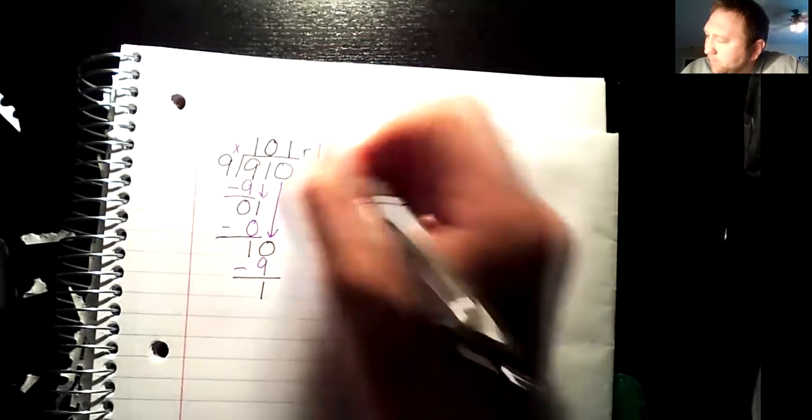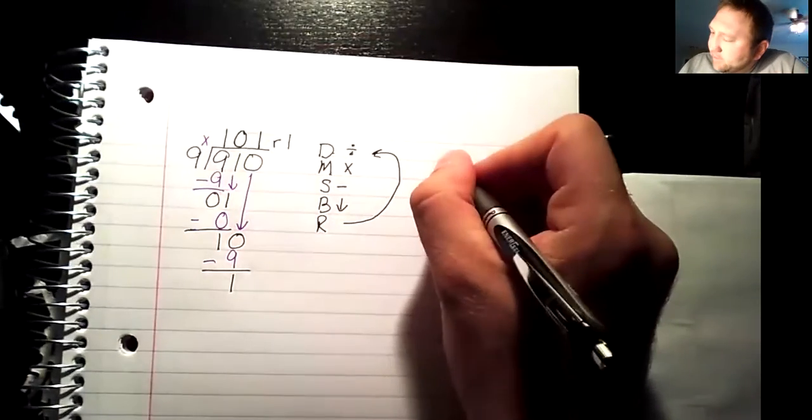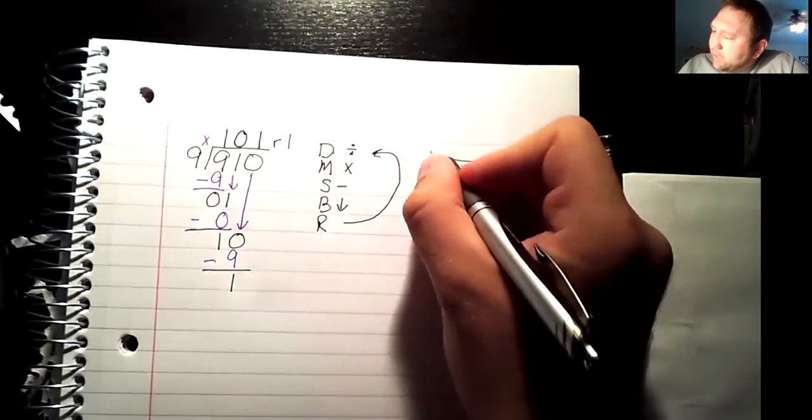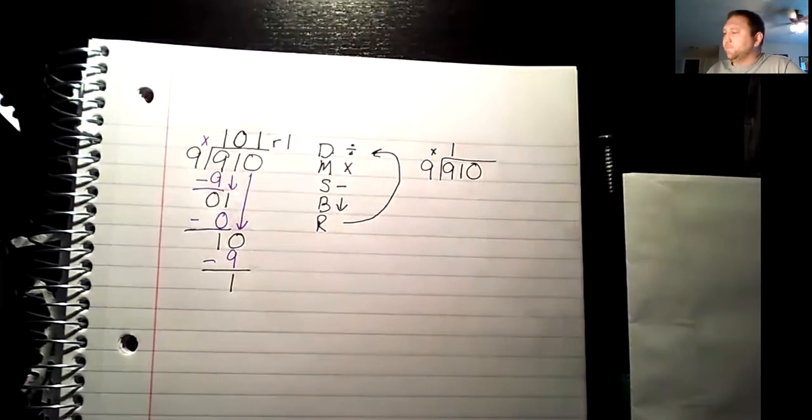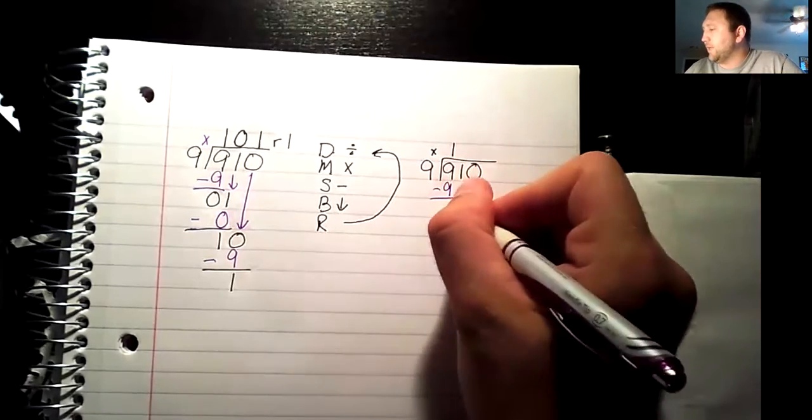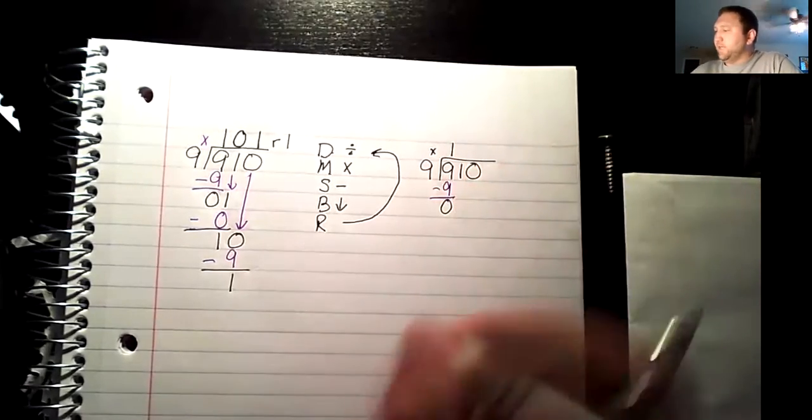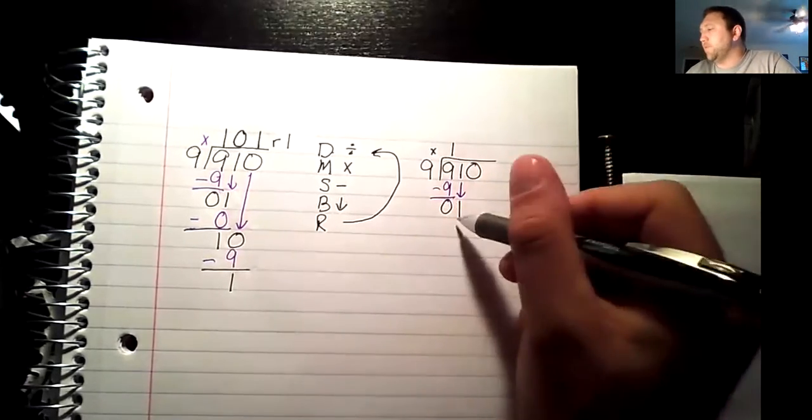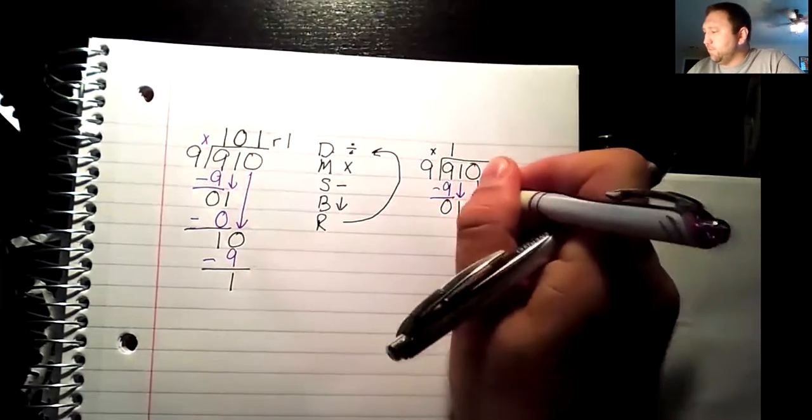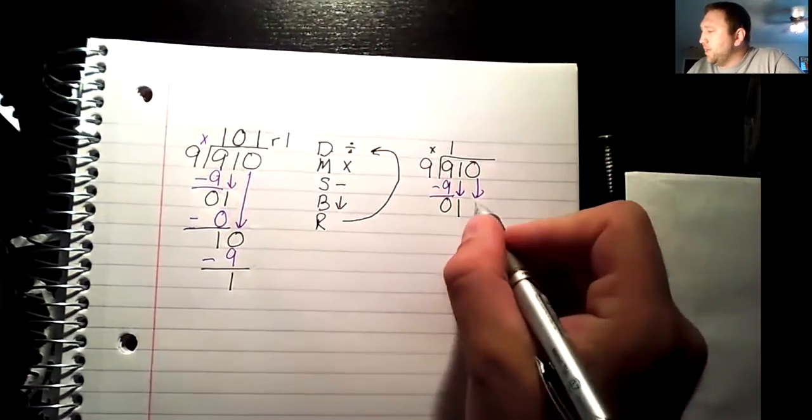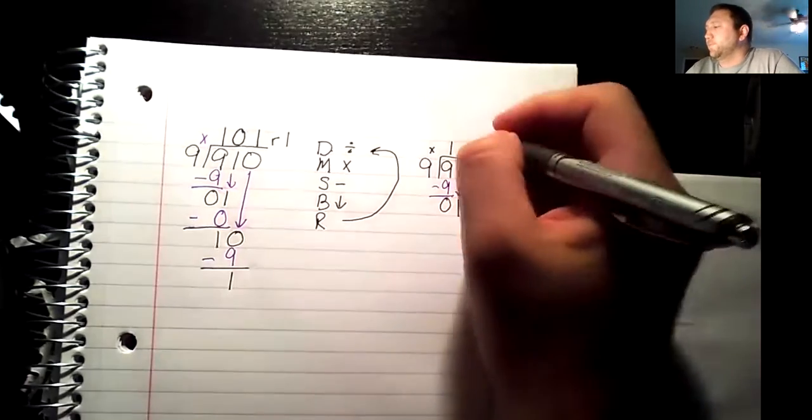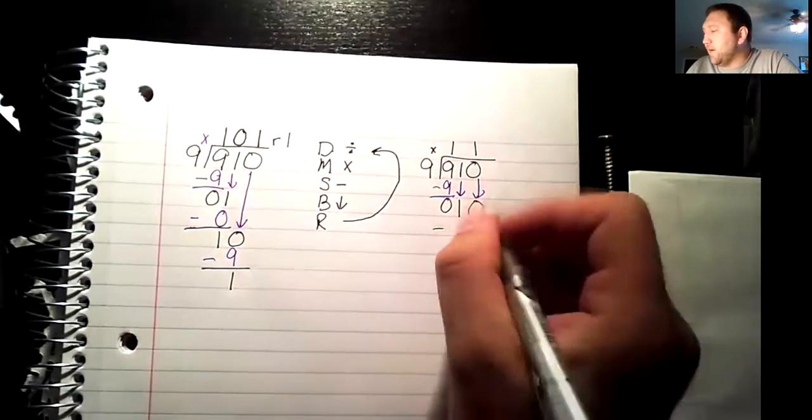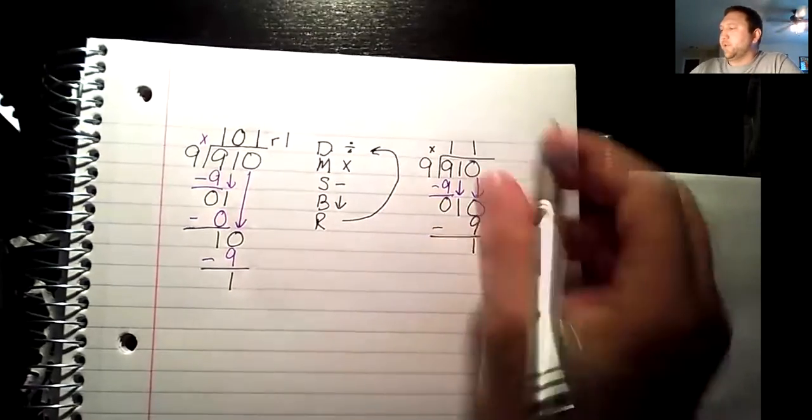Now what happens, I see a lot of students do this. They go like this and they say well, 9 times 1 is 9. They subtract that, they get 0, they bring down the 1 just like you're supposed to. And then they say well, I can't do that, so they automatically bring down the next number. And now they go 10 divided by 9 and they get 1. So then they subtract and they get 1.